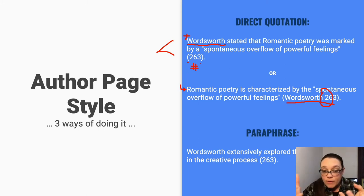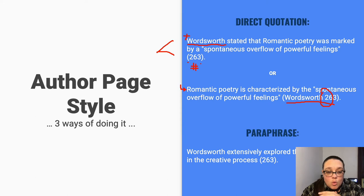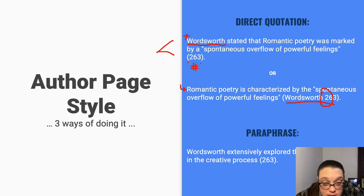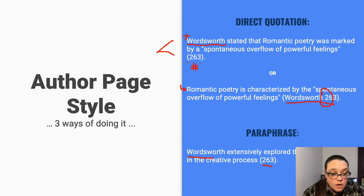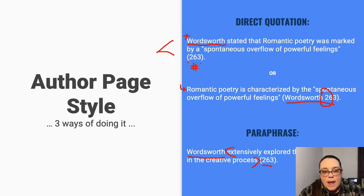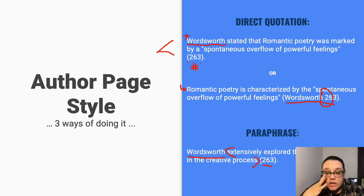If you want to paraphrase that same idea, you could do something like this last example: 'Wordsworth extensively explored the role of emotion in the creative process' (263). Again, you'll see that the elements required for your citation — the last name of the author and the page number — contain the same information as the other sentences, just presented in a slightly different way. Both citations tell readers that the information can be located on page 263 of a particular work by an author named Wordsworth.